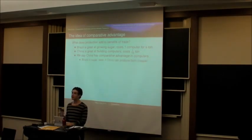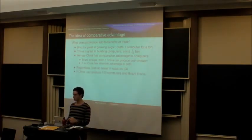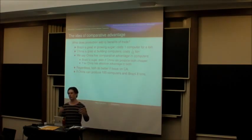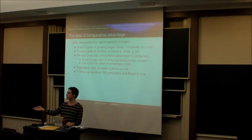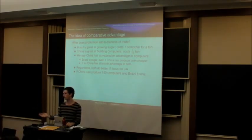Now, that means that China has what we call a comparative advantage in producing computers compared to Brazil, whereas Brazil has a comparative advantage in producing sugar. Now, that's even true if China could produce, because they've got more people, more of everything. So, China might be able to produce a hundred computers or ten tons of sugar, whereas Brazil can produce eight tons of sugar or eight computers. So, China can clearly produce more of everything, but in relative terms, they're better at producing computers than they are producing sugar compared to Brazil.